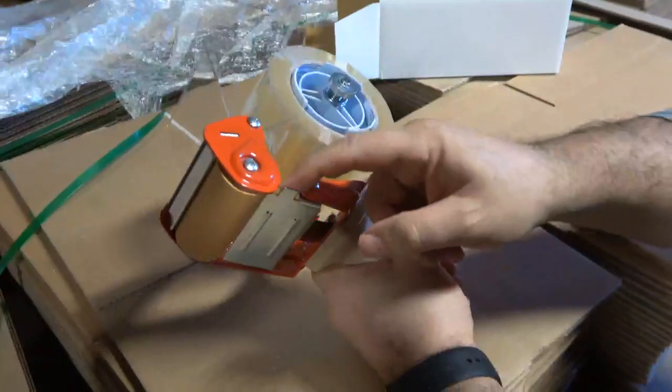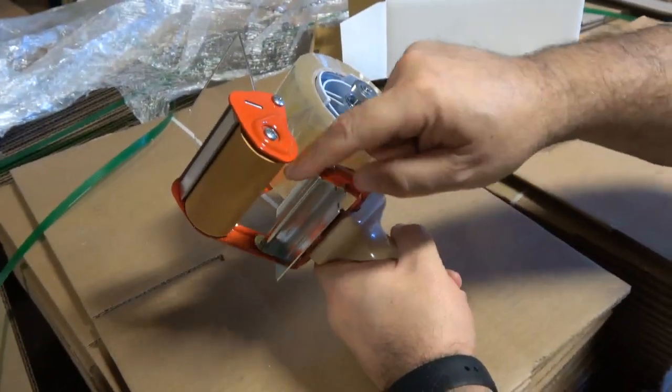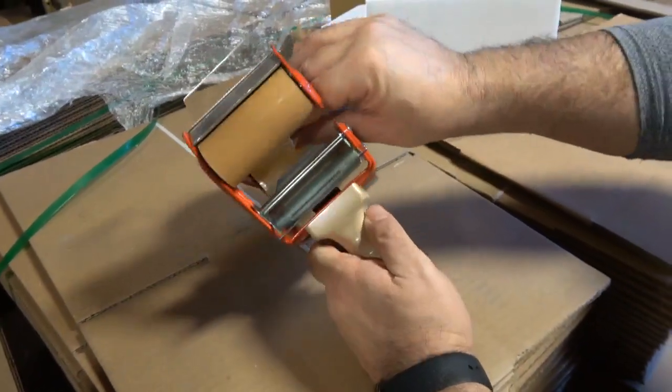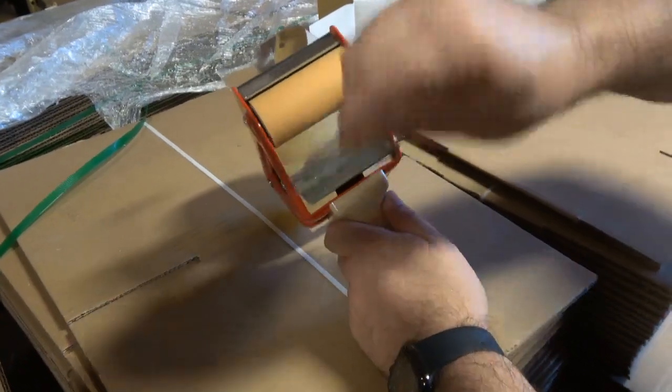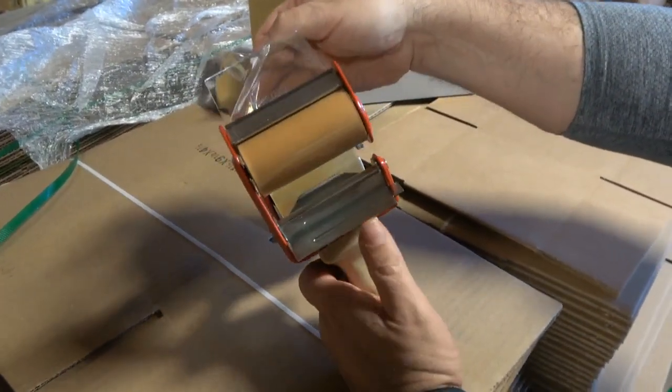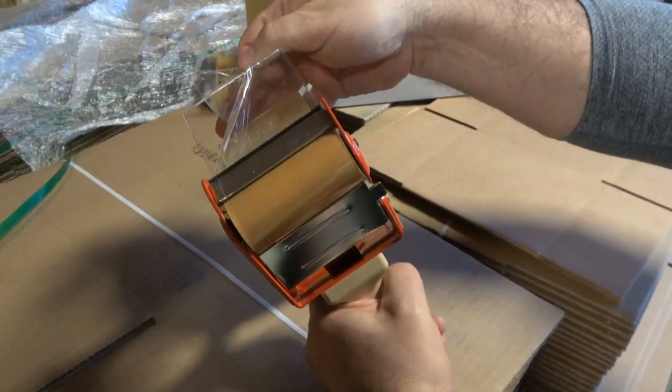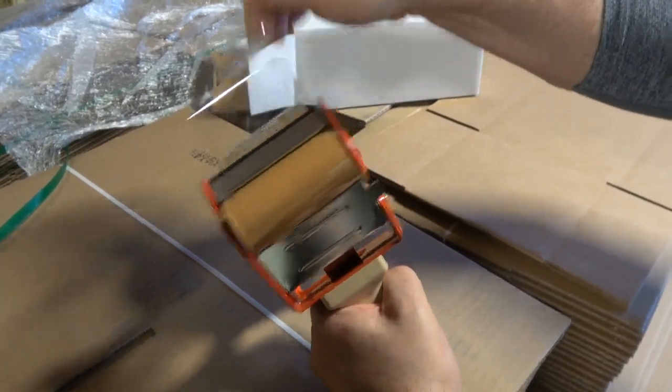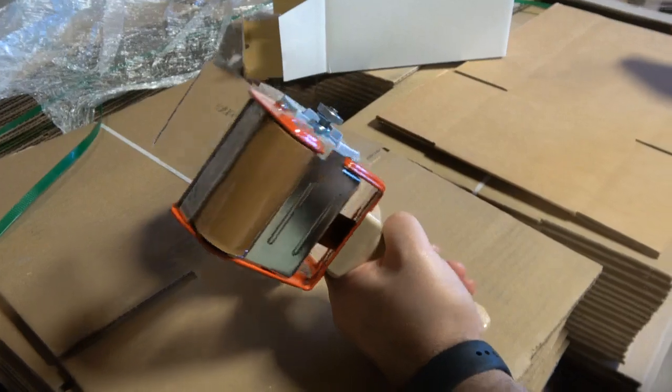We're now going to open up our gate and pull the tape in between this space here and around the roller to the blade. Be careful, blades can be sharp. We're now going to close the gate and cut off the excess bit of tape.